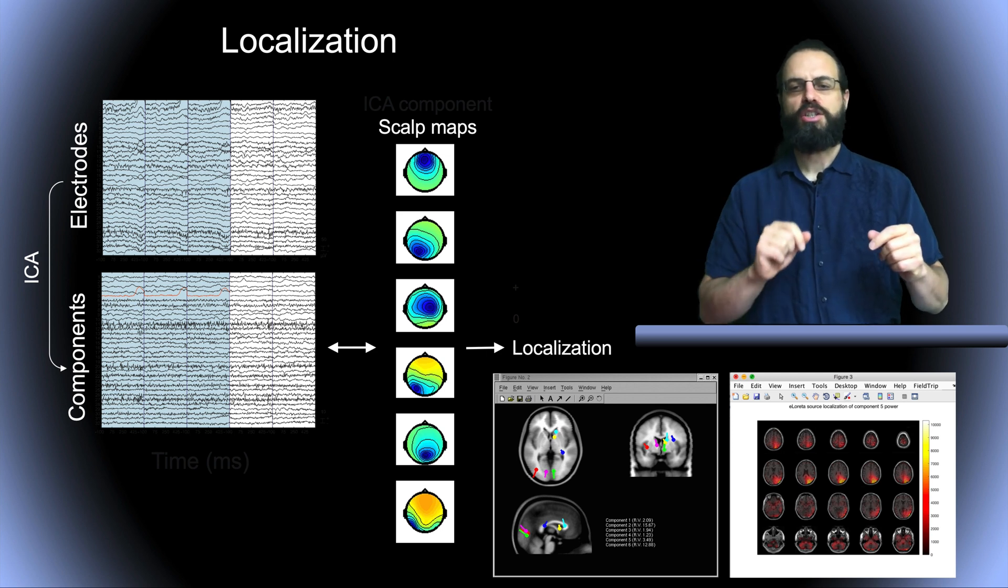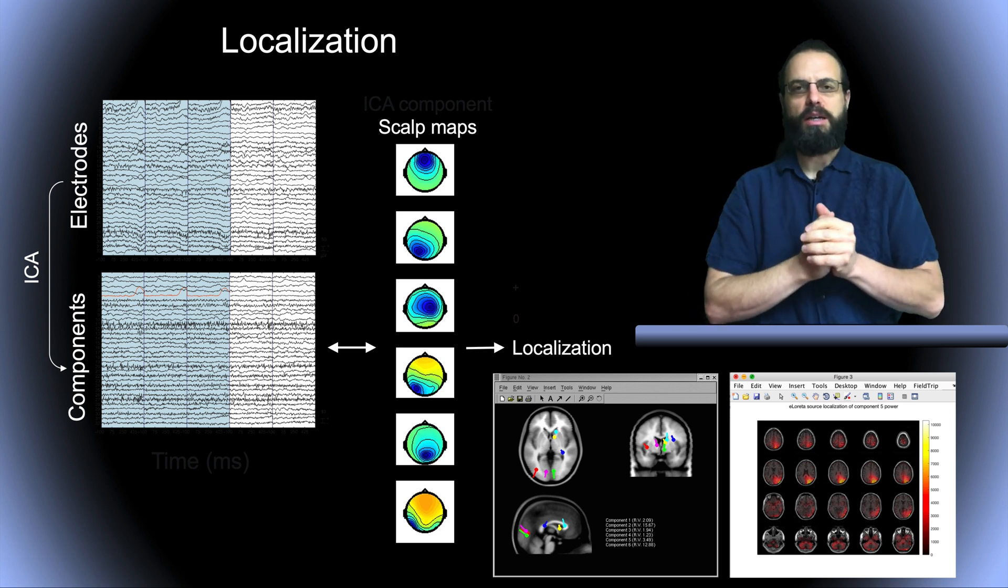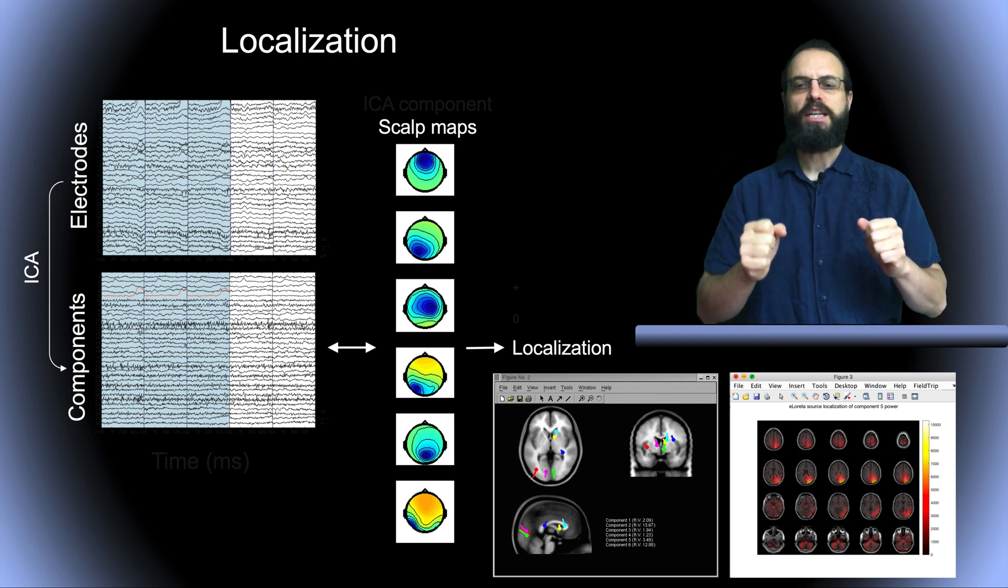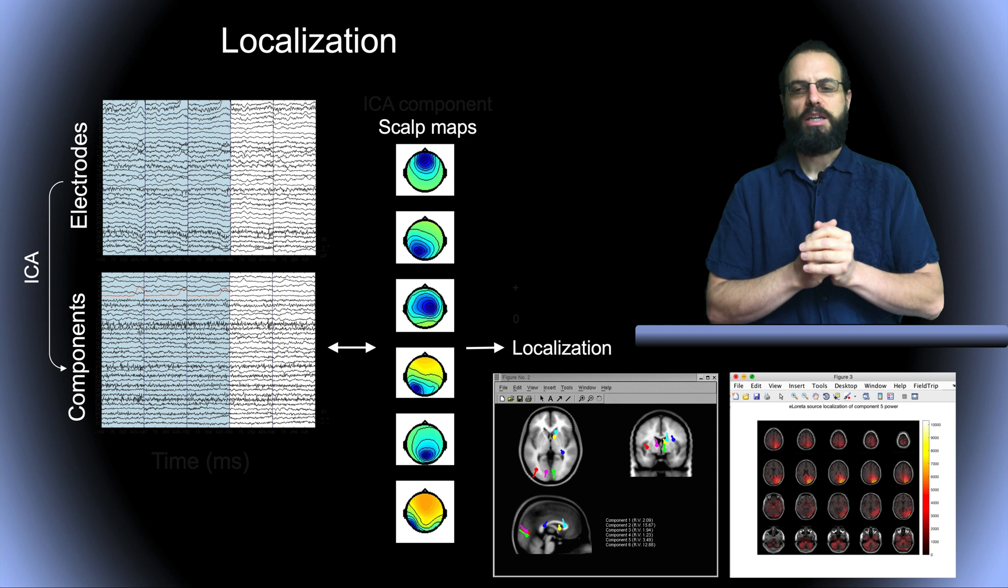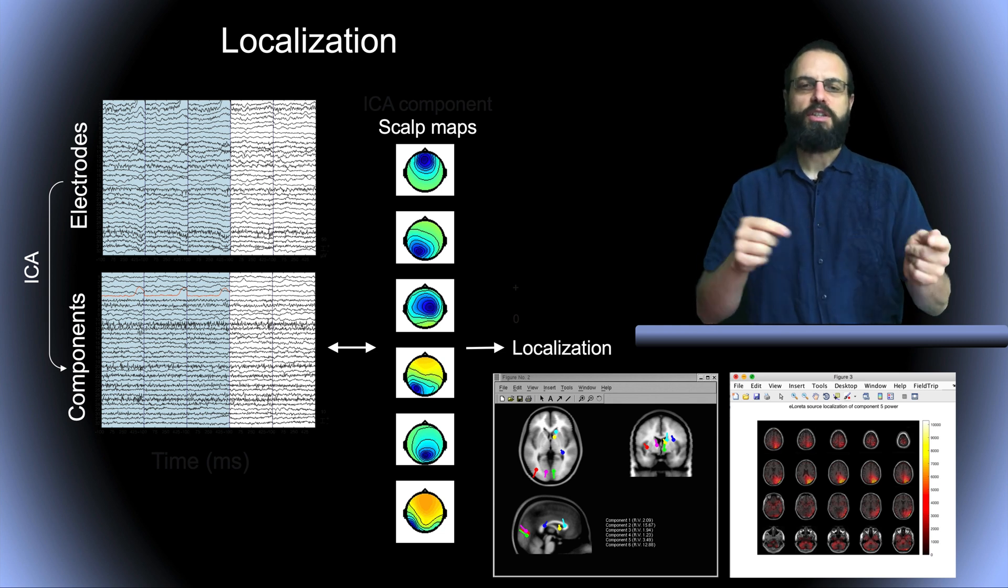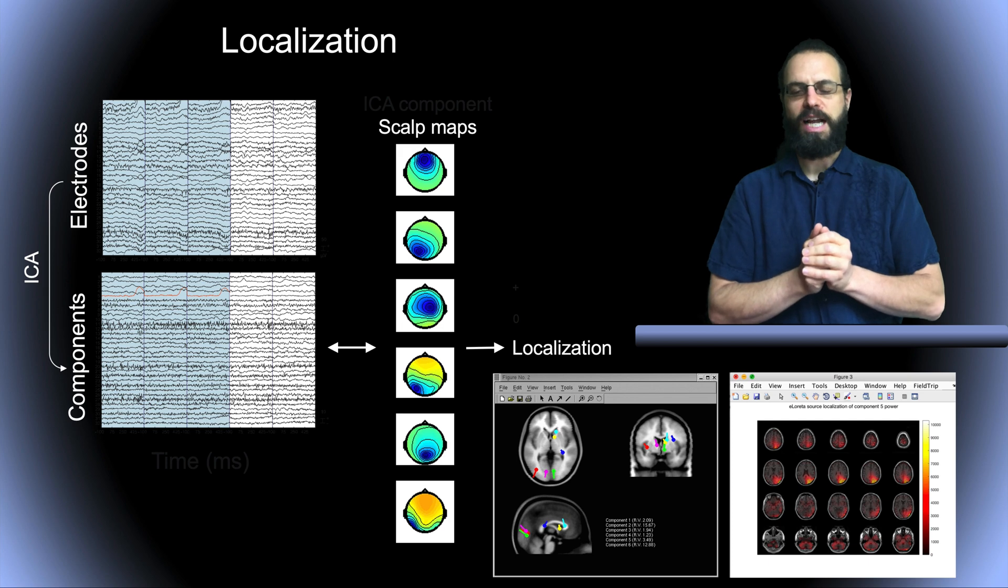Here I show two different types of source localization. We can use dipoles, which are simple source point lights in the brain, and we can also use distributed source reconstruction, such as Loreta. That's what's shown on the right, using the DeepFit plugin of EEGLAB.